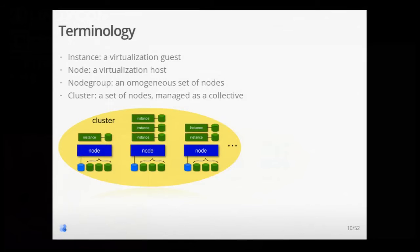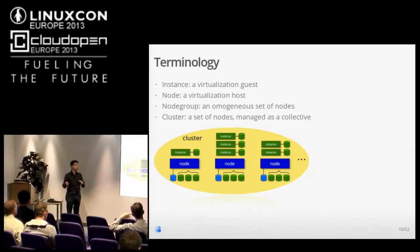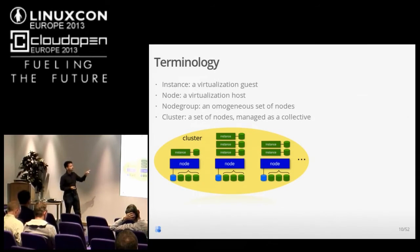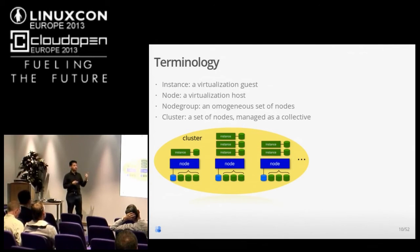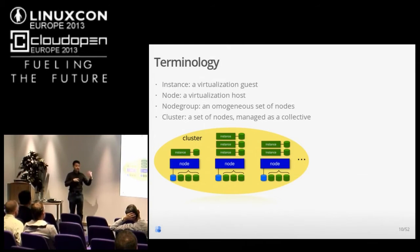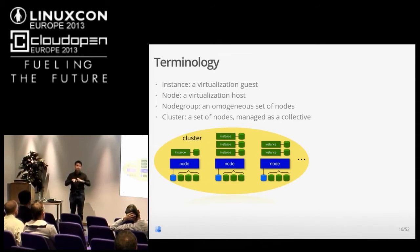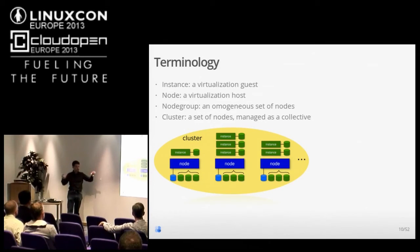Some terminology I'll be using: An instance is a virtualization guest, a VM. A node is a virtualization host, the physical machine where you install something. We have the concept of a node group, which is a homogeneous set of nodes. When you have an instance installed, you have a primary and a secondary ready to take over — these are inside the same node group. The cluster can be composed of multiple node groups, all managed collectively by Ganeti.